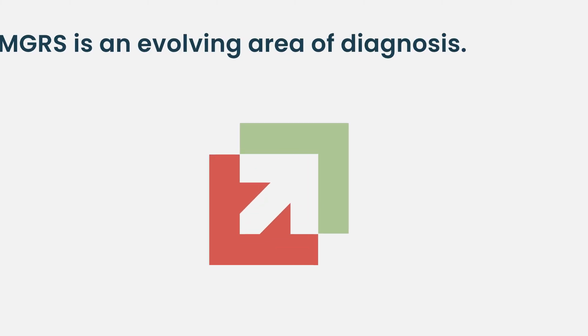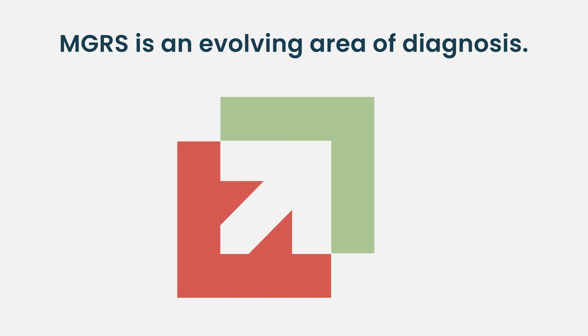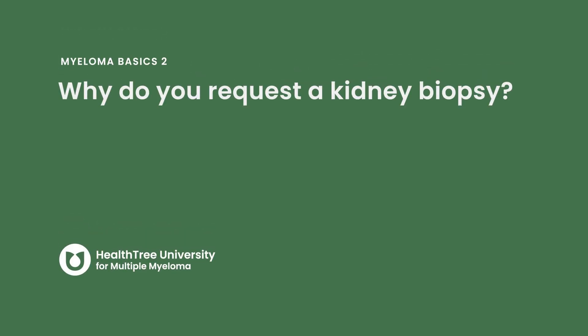If the answer is yes to both, then a kidney biopsy is indicated and aggressive treatment of this M spike to eliminate it is indicated, so you can take them to a kidney transplant. But in general, monoclonal gammopathy of renal significance is an evolving diagnosis and a lot of centers are hesitant to treat those patients. I usually request a kidney biopsy to treat those patients — that is the most standard way of doing it.